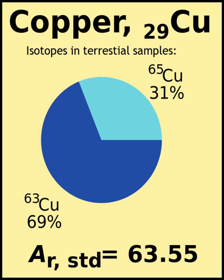This atomic weight is larger than that of the next element potassium, causing confusion in the days when the places of elements in the periodic table were largely determined according to atomic weight. However, such is not the case in the rest of the universe. Argon produced directly by stellar nucleosynthesis is dominated by the alpha-process nuclide 36Ar. Correspondingly, solar argon contains 84.6% 36Ar, and the ratio of the three isotopes 36Ar, 38Ar, 40Ar in the atmospheres of the outer planets is 8400 to 1600 to 1. The atomic weight of argon in the sun and most of the universe would therefore be only approximately 36.3.